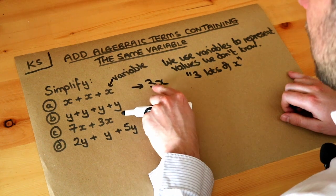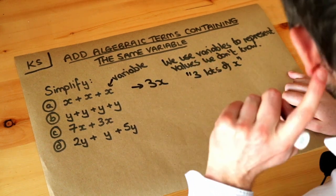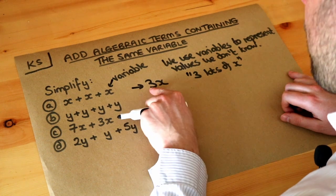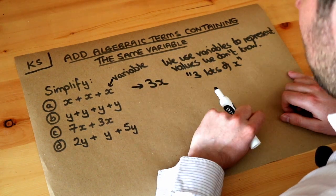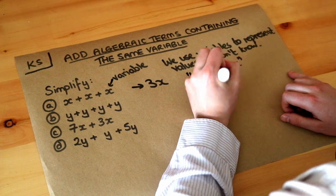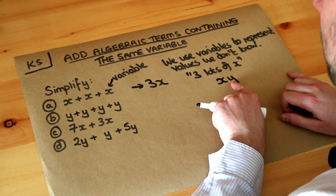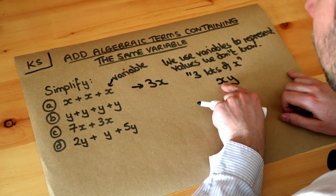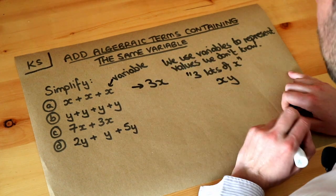So when we say 3x in algebra that just means three lots of x. In general in algebra when we have things next to each other it means that we're multiplying them together. So for example if I wrote xy that means x times y. If you have these letters next to each other or things next to each other it means that you're multiplying them together.